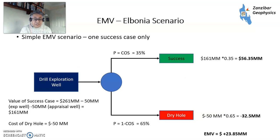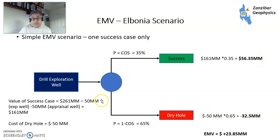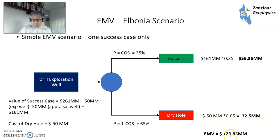Looking at a simple scenario — basically success or failure — we take the mid-case. The value of the success is $261 million minus the cost of the exploration well ($50 million) minus the cost of the appraisal well, giving us a value of $161 million. The cost of a dry hole is $50 million. Our chance of success is estimated at 35%, so on the success branch we have $161 million multiplied by 35%, giving $56.35 million. On the dry hole branch, probability is 65%, giving a value of minus $50 million times 0.65, which is minus $32.55 million. Adding the two together gives an expected monetary value of $23.85 million.